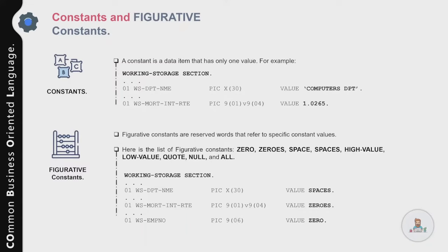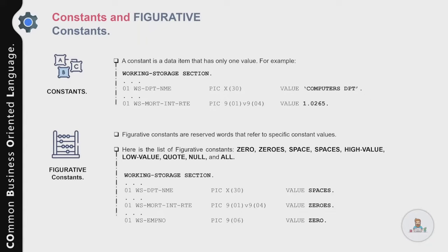In the following example, three variables are defined in Working Storage Section as temporary variables: DEPARTMENT-NAME, MORTGAGE-INTEREST-RATE, and EMPLOYEE-NUMBER. The initial value of all these variables is assigned with the help of a value clause and figurative constants. For example, DEPARTMENT-NAME is defined as X(30) — alphanumeric — with a value of SPACES.